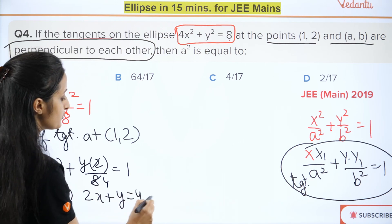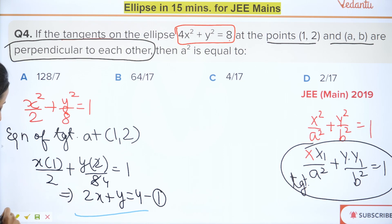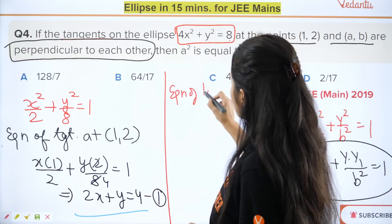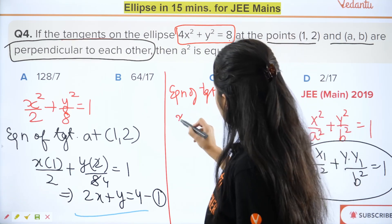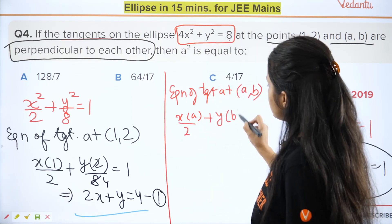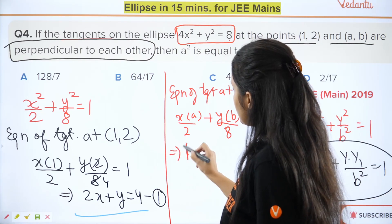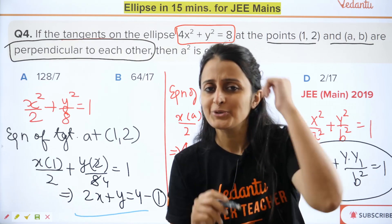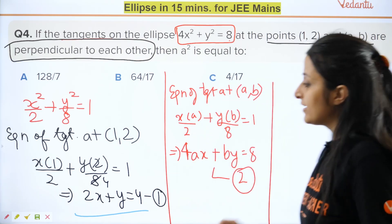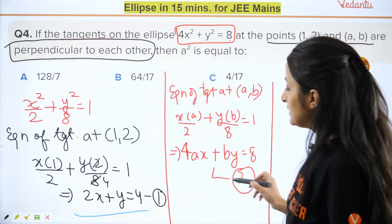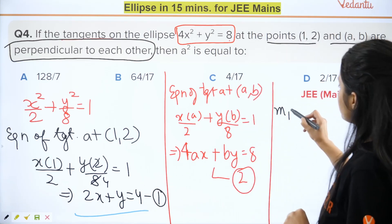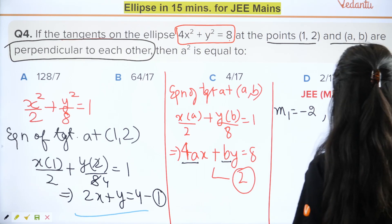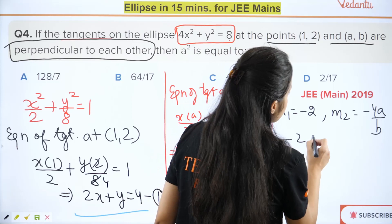The tangent at (1, 2) gives: x(1)/2 + y(2)/8 = 1, which simplifies to 2x + y = 4 — mark this as equation 1. The tangent at (a, b) gives: ax/2 + by/8 = 1, or equivalently 4ax + by = 8 — mark as equation 2. Their slopes are m₁ = −2 and m₂ = −4a/b respectively.